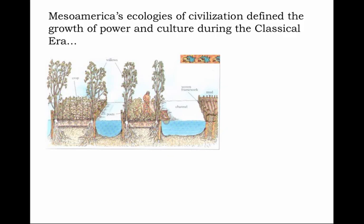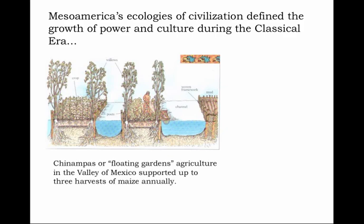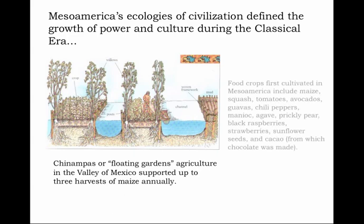All great civilizations require concentrated food production to feed the urban masses. In Teotihuacan, extraordinary human engineering took place — the humanizing of the landscape. Mesoamerica saw the growth of power and culture during the classical era, as in the case of the famous chinampas, or floating gardens agriculture, in the Valley of Mexico, which supported up to three harvests of maize annually. These floating gardens were built right on the lakes of Mesoamerica, producing crops of maize and other great food crops including squash, tomatoes, avocados, guavas, chili peppers, manioc, agave, prickly pear, black raspberries, strawberries, sunflower seeds, and cacao from which chocolate was made.